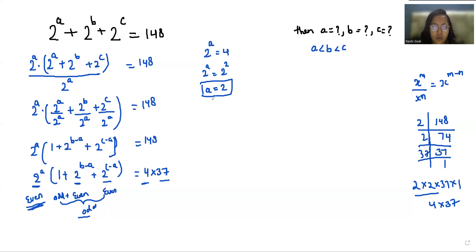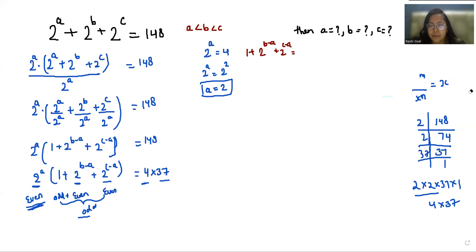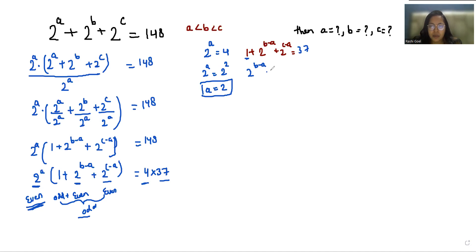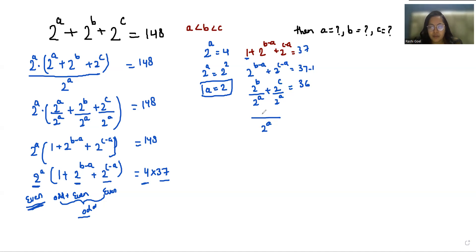Now, 1 + 2^(b-a) + 2^(c-a) = 37, with a < b < c. Taking the 1 to the other side: 2^(b-a) + 2^(c-a) = 37 - 1 = 36. We can write this as 2^b / 2^a + 2^c / 2^a = 36.